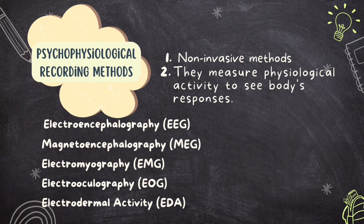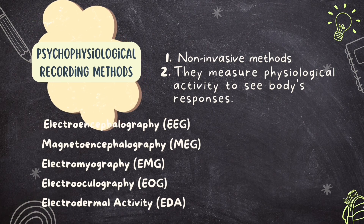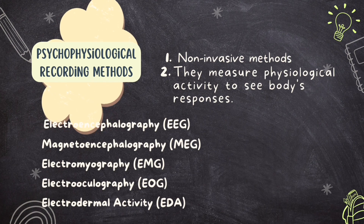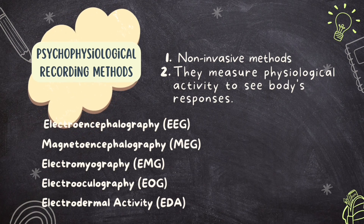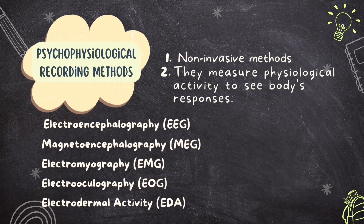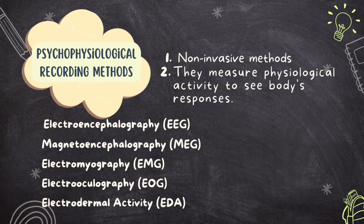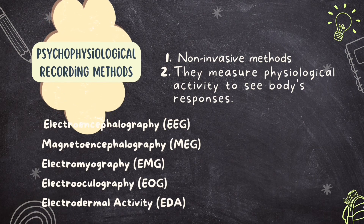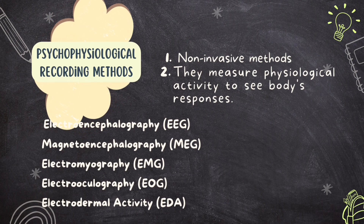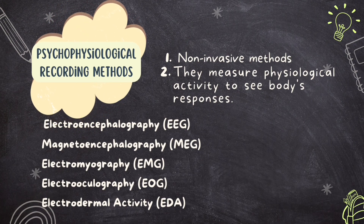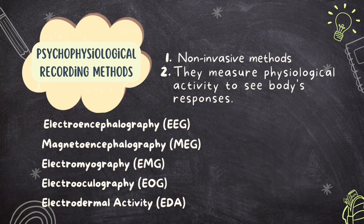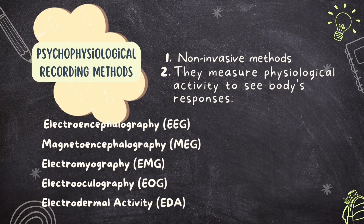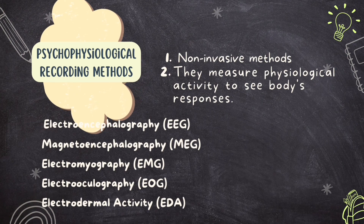Electrooculography, or EOG, studies eye movements by placing small sensors near the eyes to track how they move. Lastly, electrodermal activity measures how sweaty our skin gets when we feel emotions — tiny sensors on the fingers tell us how our skin responds to different situations. These methods teach us a lot about our bodies without too much poking or prodding.